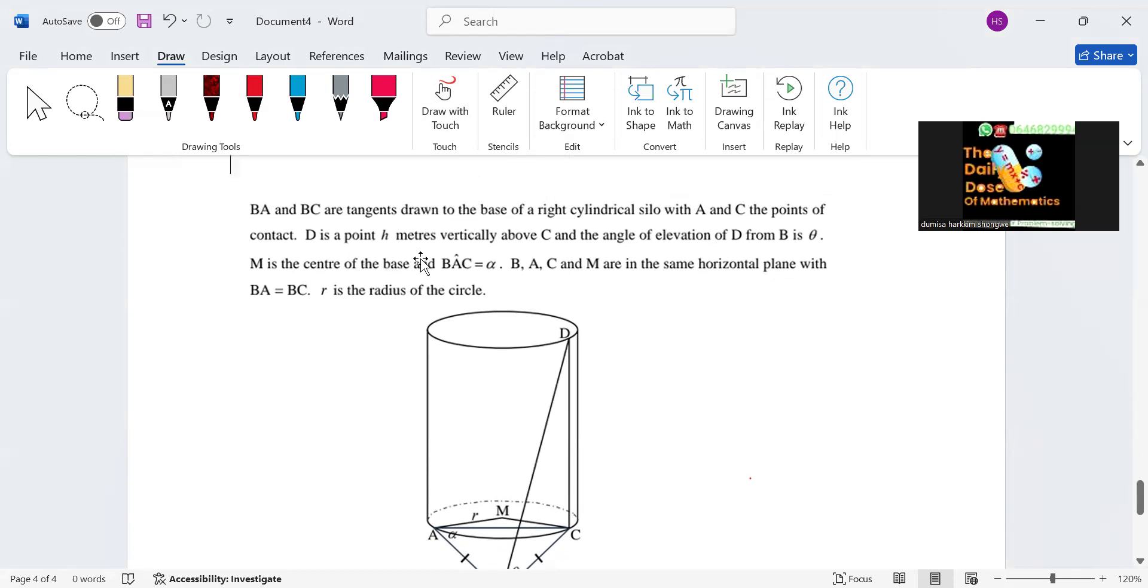D is the point on, AD is the point h meters vertically from C, so this is h here starting from here to here. The angle of elevation is theta, which is this one, and then M is the center of the circle.